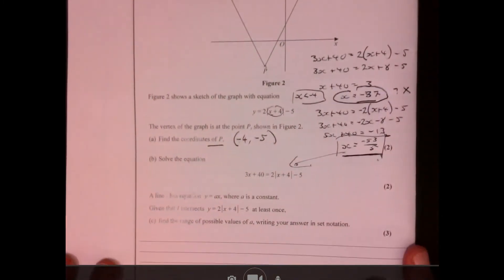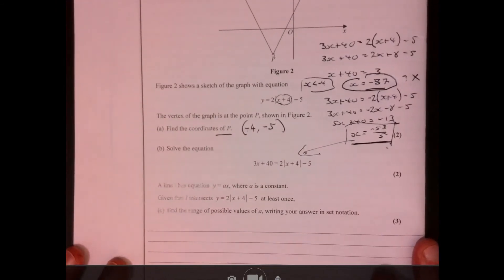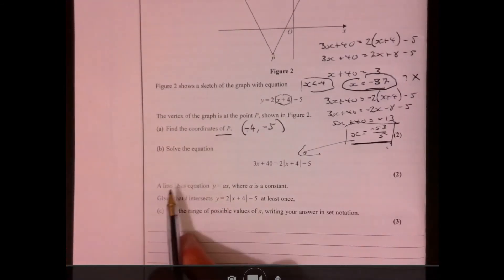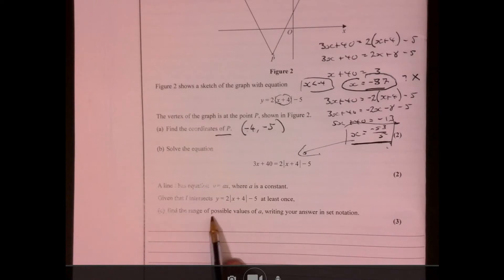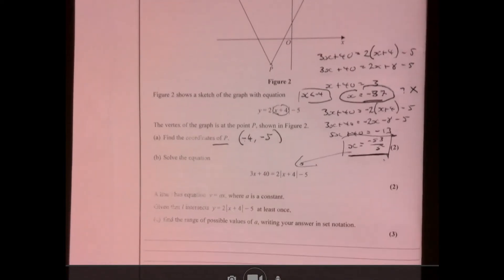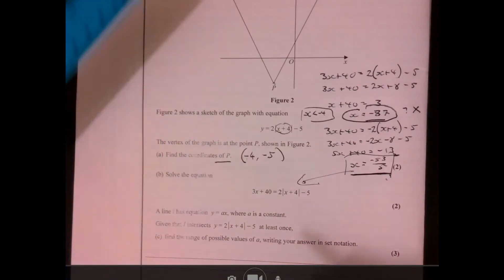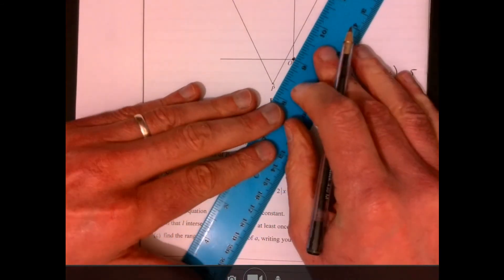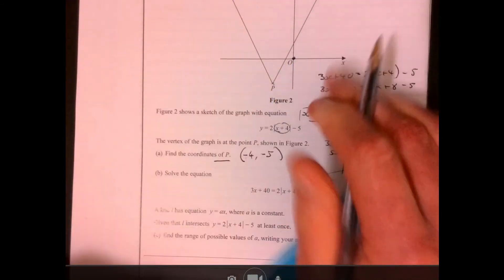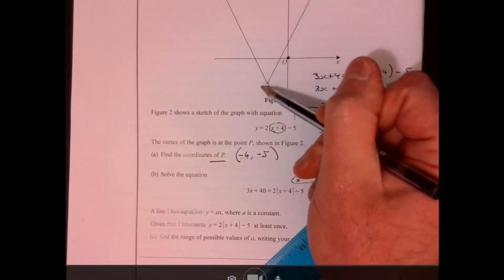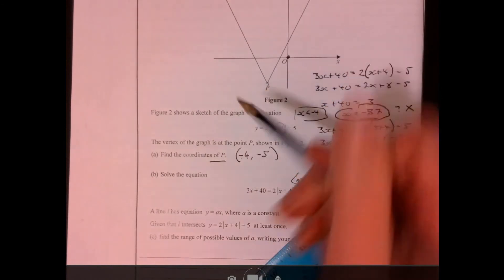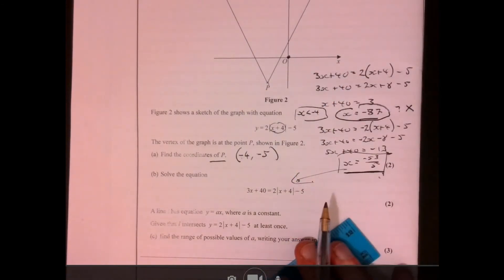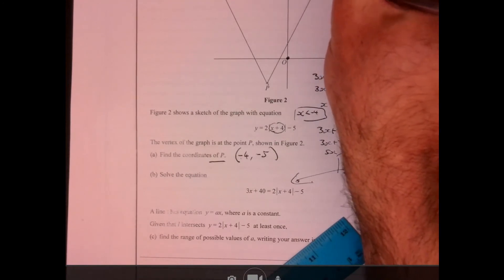Now the last part of the question, I had to think about this for a moment actually, is that what we've got to do is find the range of possible values of a. Now the easiest thing to do is to go back up and actually think about, we've got y equals ax. So y equals ax is got to go through this point just here. Now the gradient of this line here, we know from the original, is 2. So that there has got a gradient of 2.